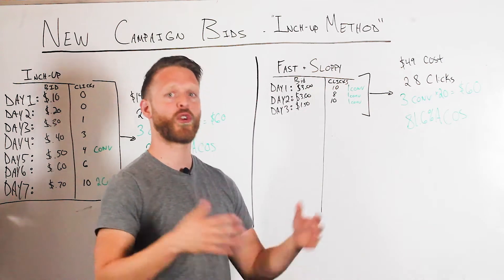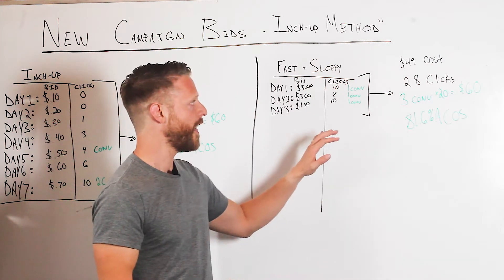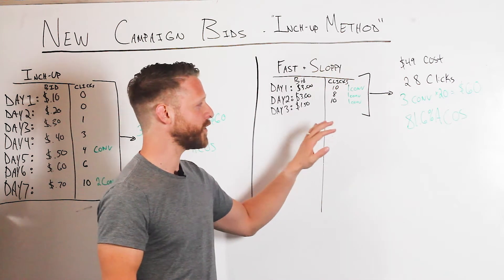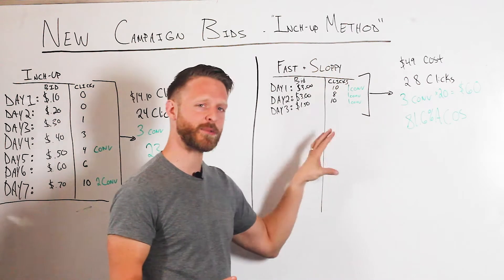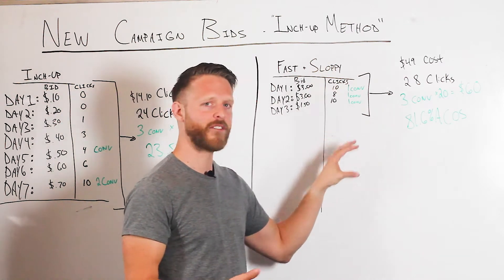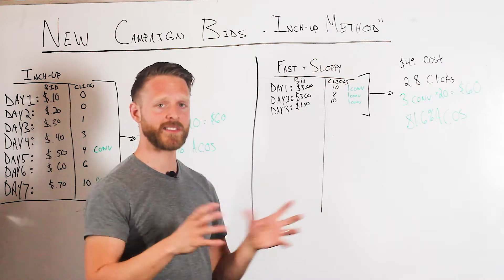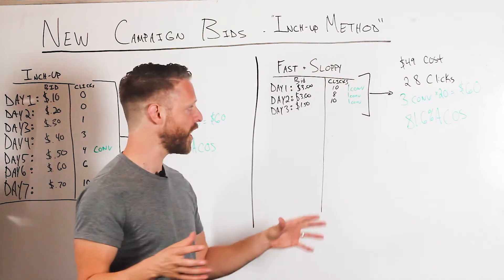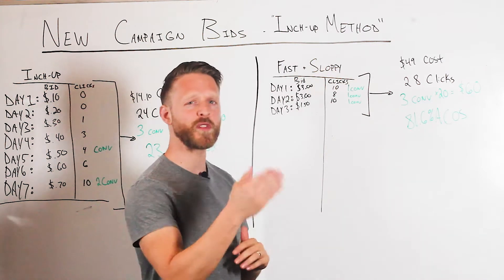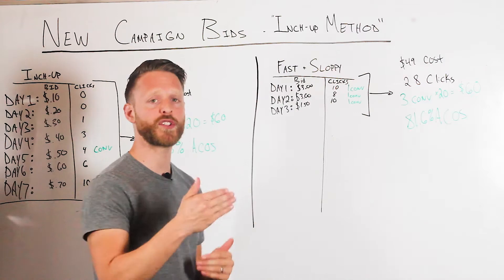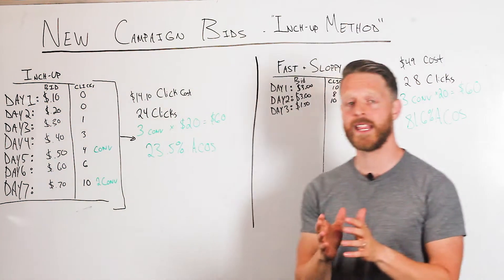They may cut the bids really drastically or get rid of it altogether, saying 'this doesn't work — this is an incredibly high ACoS.' The issue is when you repeat this process for hundreds and hundreds of keywords over months and months, you end up with a lot of terms where you overspent and overshot where you actually needed to be.